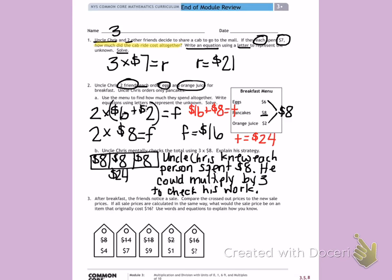Number three. After breakfast, the friends notice a sale. Compare the crossed out prices to the new sale prices. If all sale prices are calculated in the same way, what would the sale price be on an item that originally cost $16? Use words and equations to explain how you know.